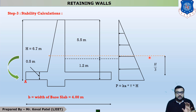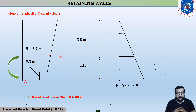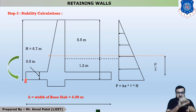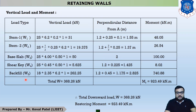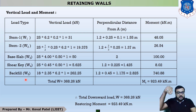Whenever this lateral earth pressure is acting on this side, we have to find out all the forces, loads, and moments at the lower left corner, which is at the end of the toe. Whenever this force is acting on this side, it generates an anti-clockwise moment. In the last lecture, we also discussed the vertical force due to the self-weight of the retaining wall and the backfill, which acts downward at the heel portion.